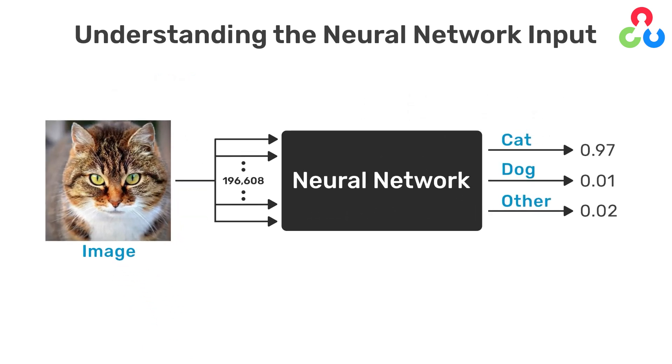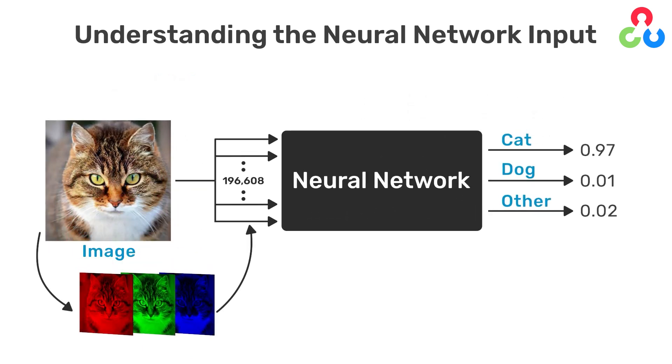Color images are very similar, except they have three components for each pixel representing the color intensity for red, green, and blue respectively. So in this case, a 256 by 256 color image is represented by 196,608 numbers.